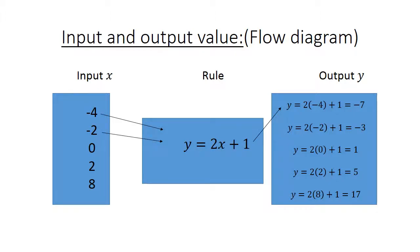Negative 2: you substitute again. Y equals 2 times negative 2 plus 1 equals negative 3. 0 goes into the rule: Y equals 2 times 0 plus 1 equals 1. Then we have 2: Y equals 2 times 2 plus 1 equals 5. And 8 goes into the rule, the input value.